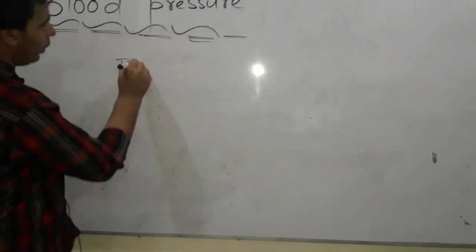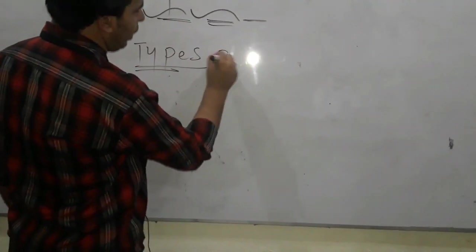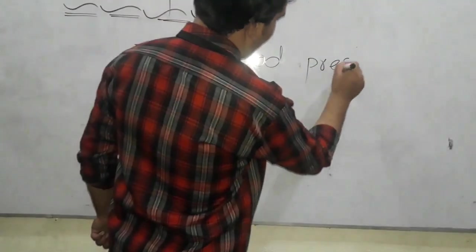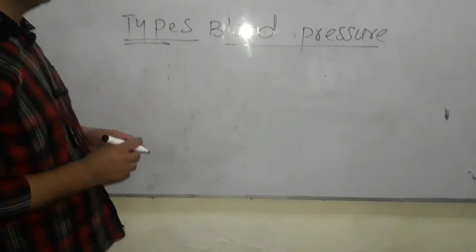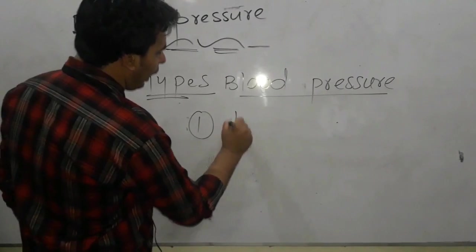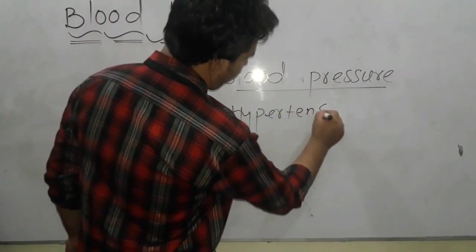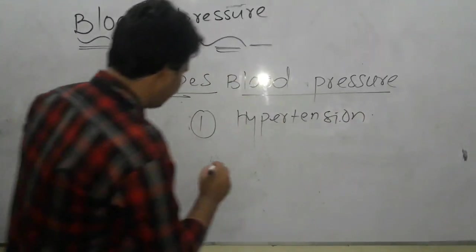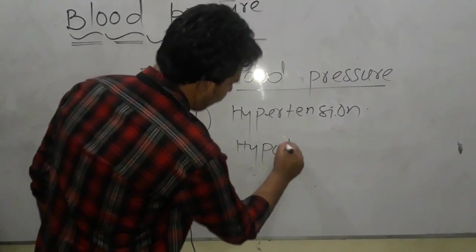Now come to the types of blood pressure. There are mainly two types of blood pressure: one is called hypertension and the second one is called hypotension.